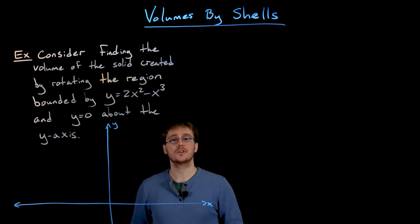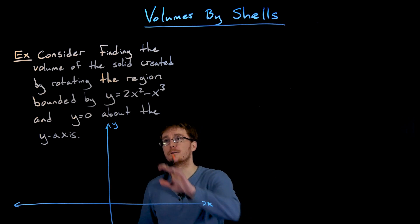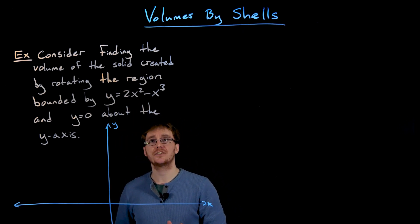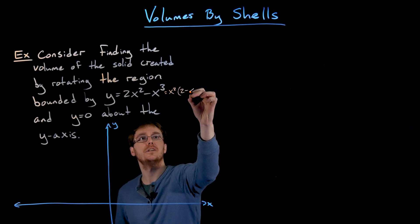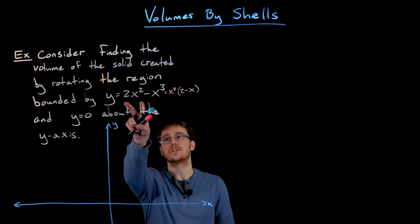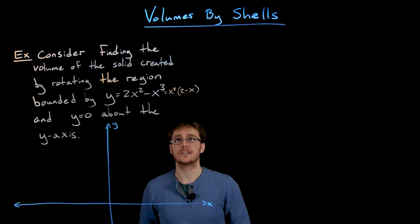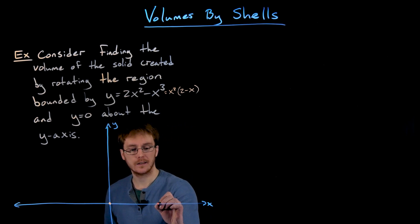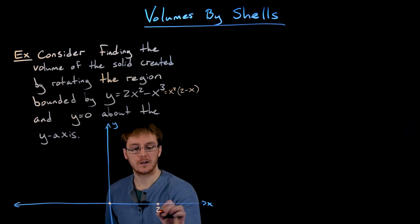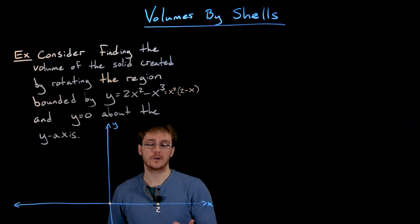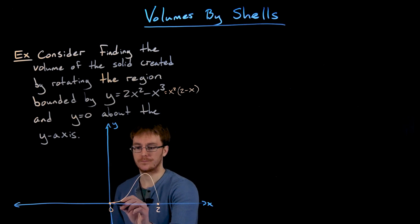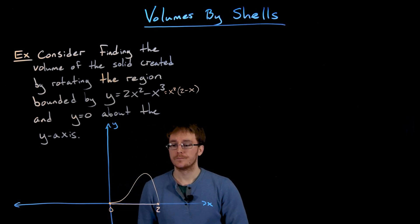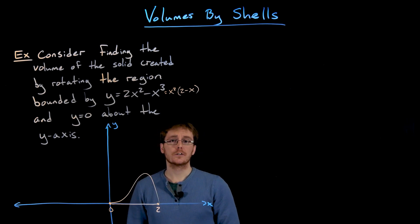Our first step is to visualize our region and decide how we can slice it up. Let's graph the region bounded by y equals 2x squared minus x cubed and y equals zero. It's helpful to factor that as x squared times (2 minus x), which gives us zeros at x equals 0 and x equals 2. The graph looks something like this, and in between these two curves is our region of interest.